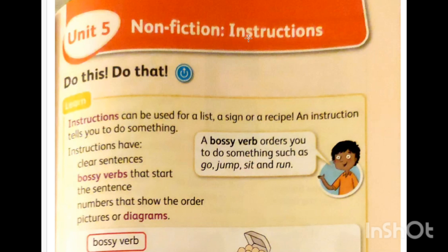When I order you to do something, I begin the sentence with the verb — like 'go,' like 'drink,' like 'lay.' So we use a bossy verb. A bossy verb orders you to do something, such as go, jump, sit, run. A bossy verb starts the sentence without a subject.